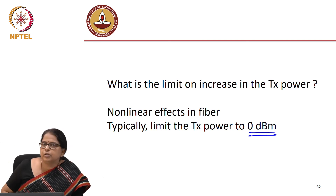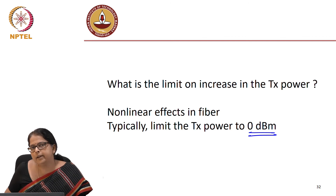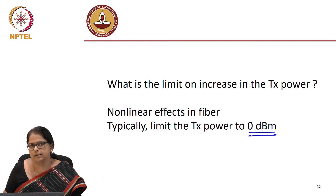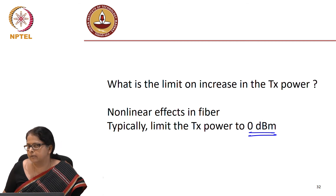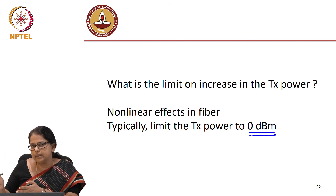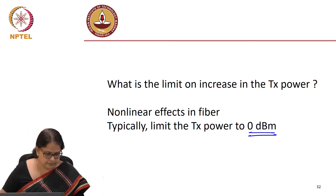So with 0 dBm as a large number in the system, the case study shows that the only way to improve the link length of one span is to use a better DCF — one where the loss budget is not wasted on the DCF but is utilized to cover more length of the transmission fibre.